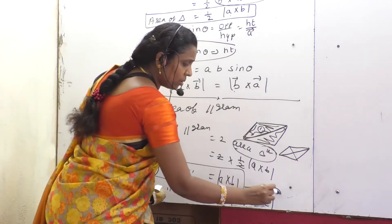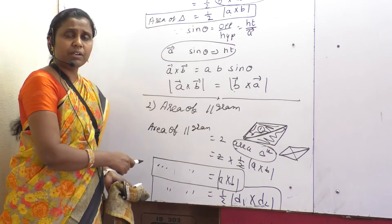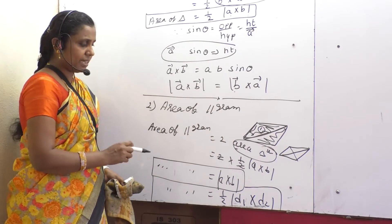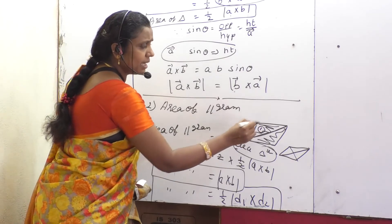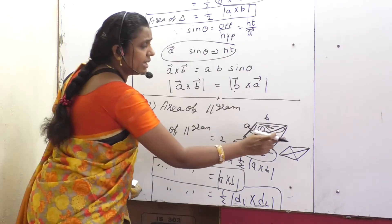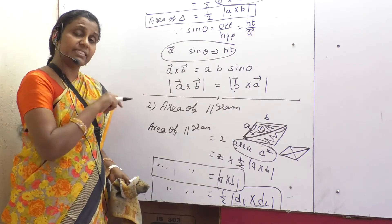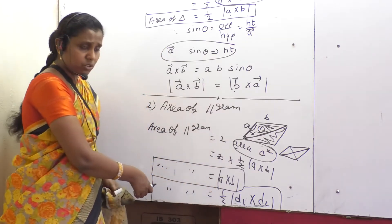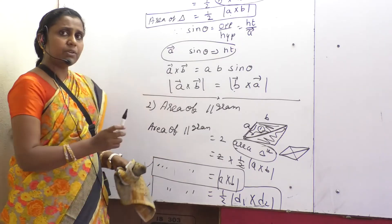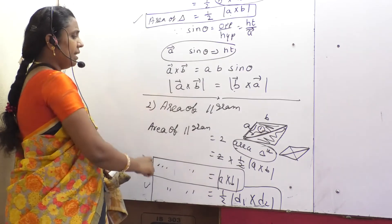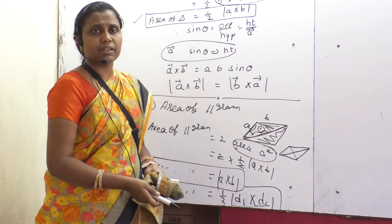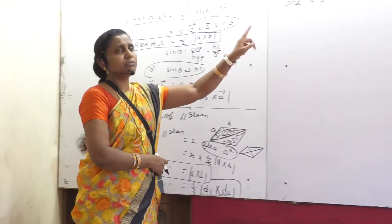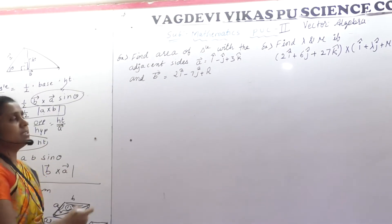So there are two formulae to find area of parallelogram. First formula: if adjacent sides are given, then area = |A cross B|. You must be very careful — adjacent sides means A and B, not opposite sides. Second formula: if diagonal sides are given, then area = half into |D1 cross D2|. In total, the formulae to remember are: area of triangle, area of parallelogram with adjacent sides, and area of parallelogram with diagonals.